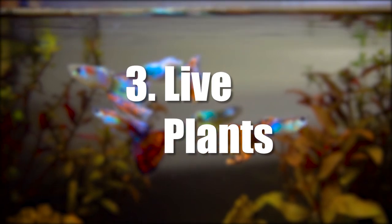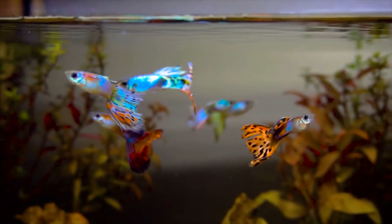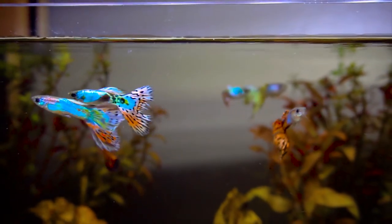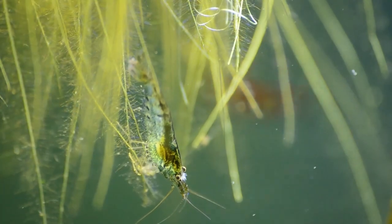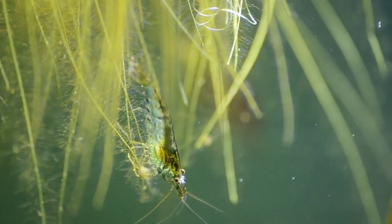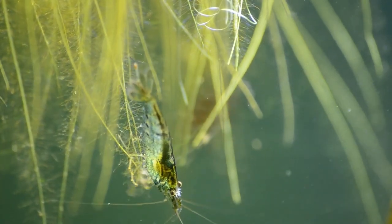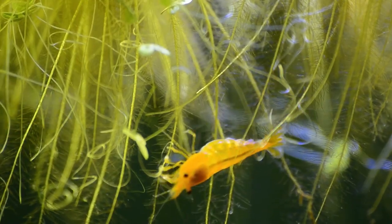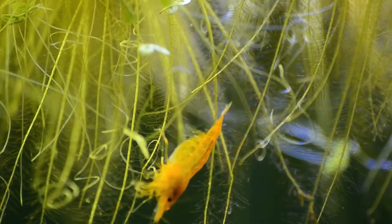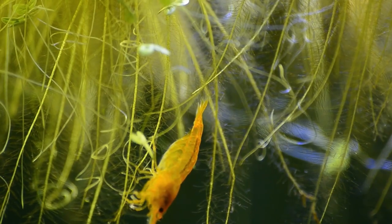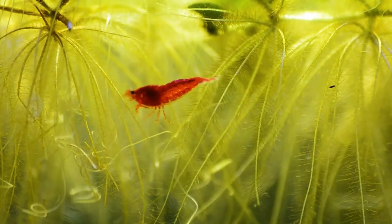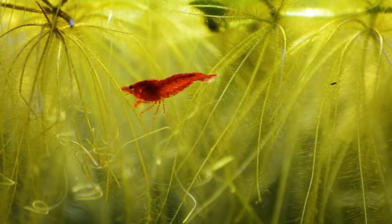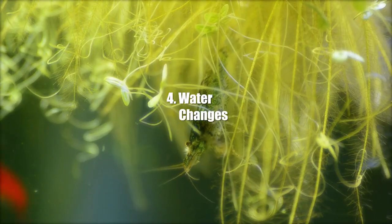Number three: live plants. Live plants are not only aesthetically pleasing but also play an important role in oxygenating the water. During photosynthesis, plants absorb carbon dioxide and release oxygen, which helps to increase the oxygen levels in the tank. Additionally, plants also help to remove toxins from the water, providing a healthier environment for fish.